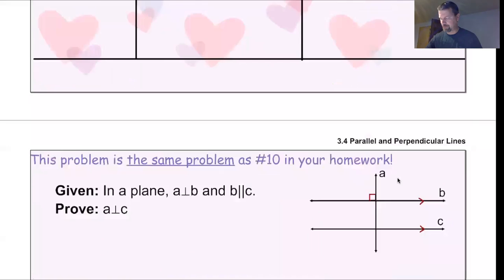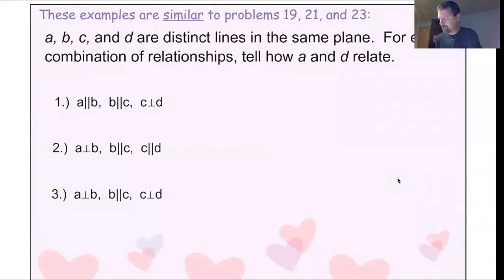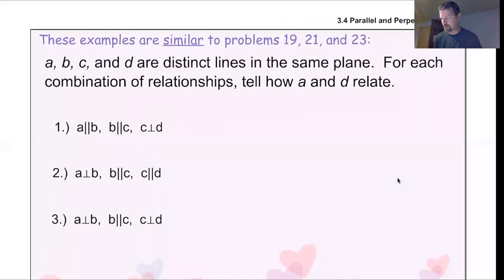Let's do a few examples. These examples are similar to problems 19, 21, and 23 that you'll see in your homework. It's just giving you some of these scenarios. So the directions say A, B, C, and D are distinct lines. So that just means they're their own separate lines, not the same lines in the same plane. And it says for each combination, tell how A and D relate. So I want to figure out how A and D are related to each other.